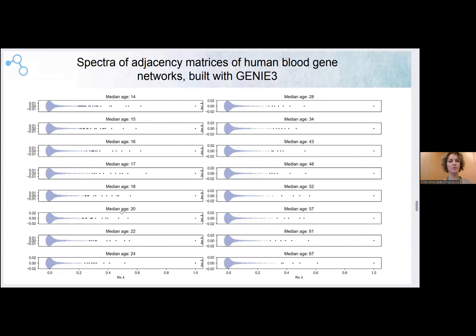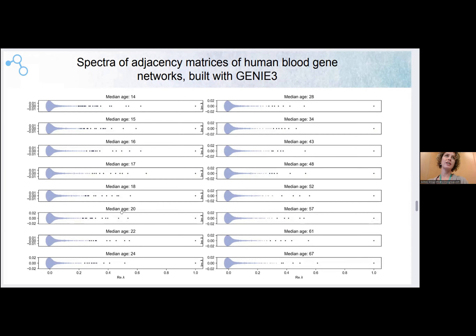After verification and validation of our networks, we apply network theory, especially spectral tools. Here you can see the different spectrum for different ages. For each age, we build a network of genes, and from each network of genes we obtain this spectrum. This was quite an unpredictable result — the spectrum really changed. So the gene regulatory network structure does change with time.